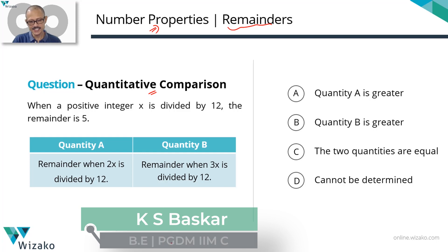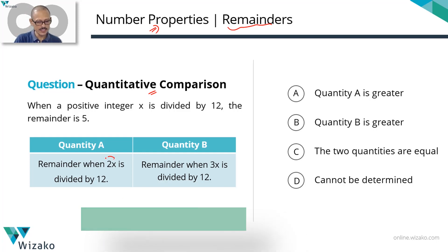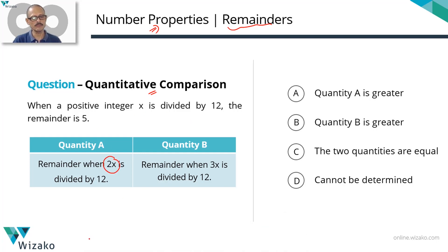Quantity A is the remainder when 2x is divided by the same divisor, 12. Quantity B is the remainder obtained when 3x is divided by the same divisor, 12.